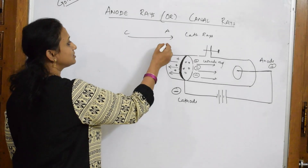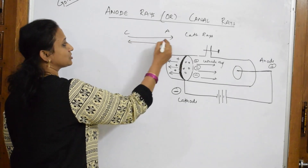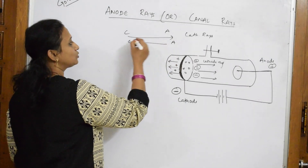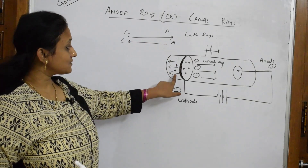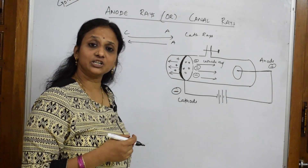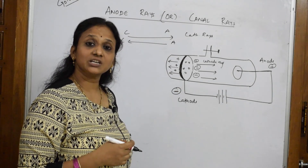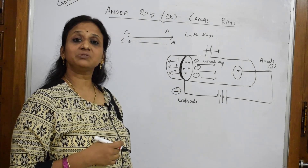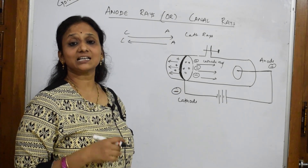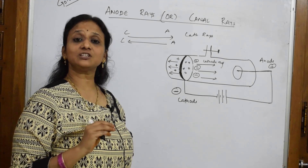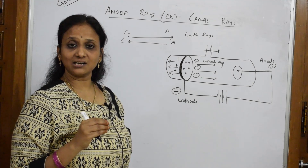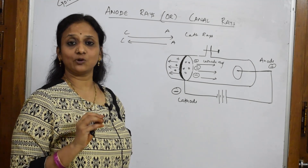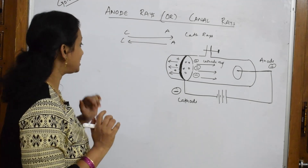The direction observed was from anode to cathode. The rays which he observed through the perforations of the holes — he named these rays as positively charged rays, also called canal rays or anode rays.